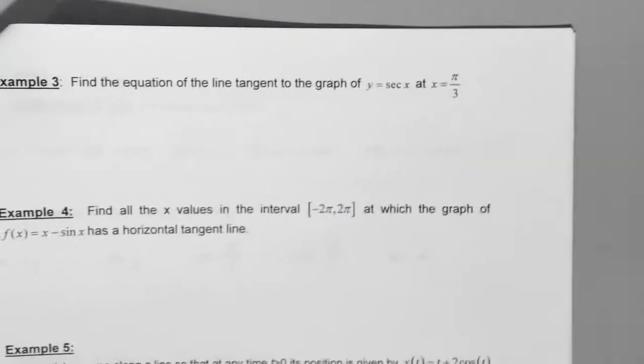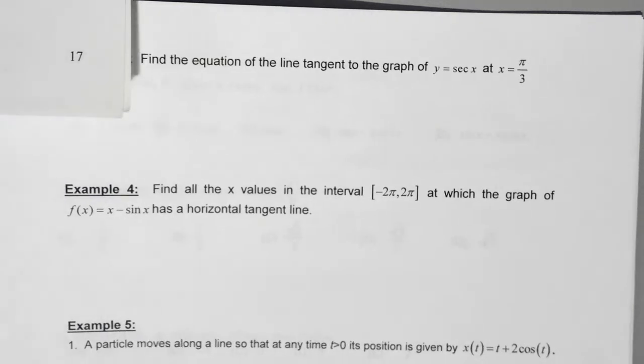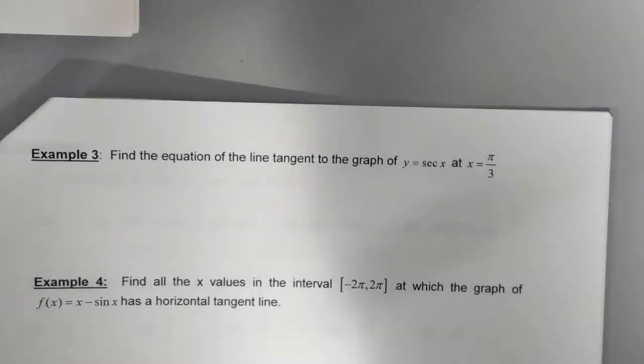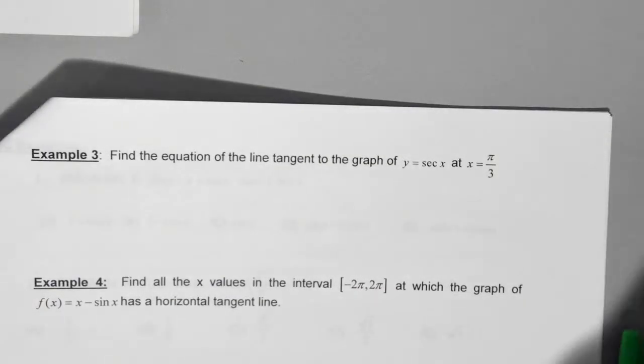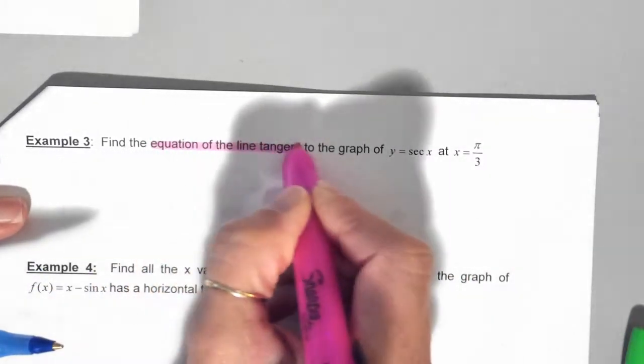On the next page, still using our trig functions, we're still applying the same concepts that we've been using before. We haven't asked you anything different, but now we're just using other derivatives. So here, when this says, find an equation of a line that is tangent to the graph, what is the first thing that you should be thinking about when you see equation of the line tangent to?